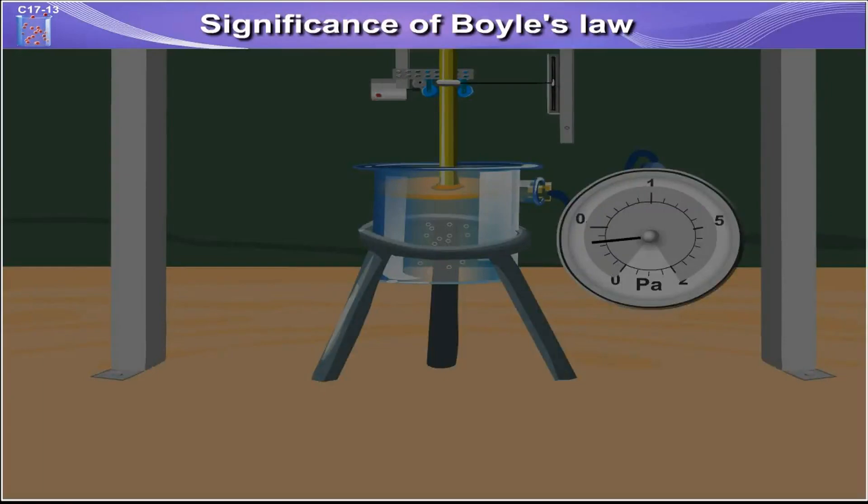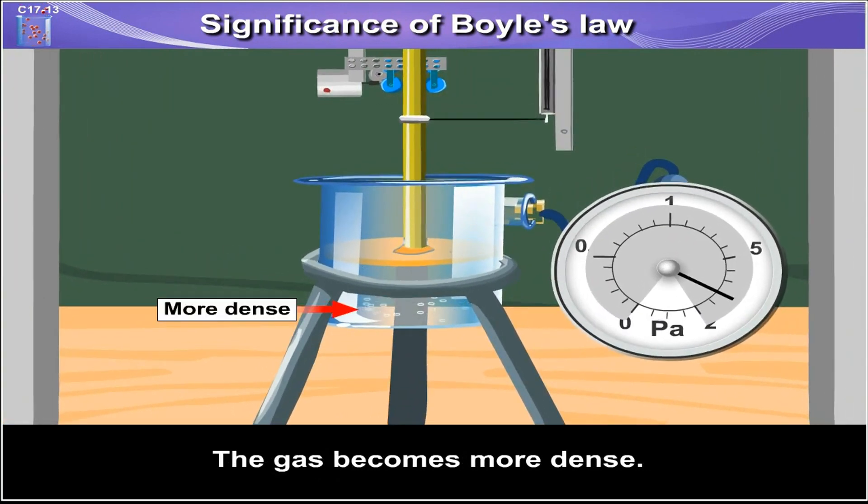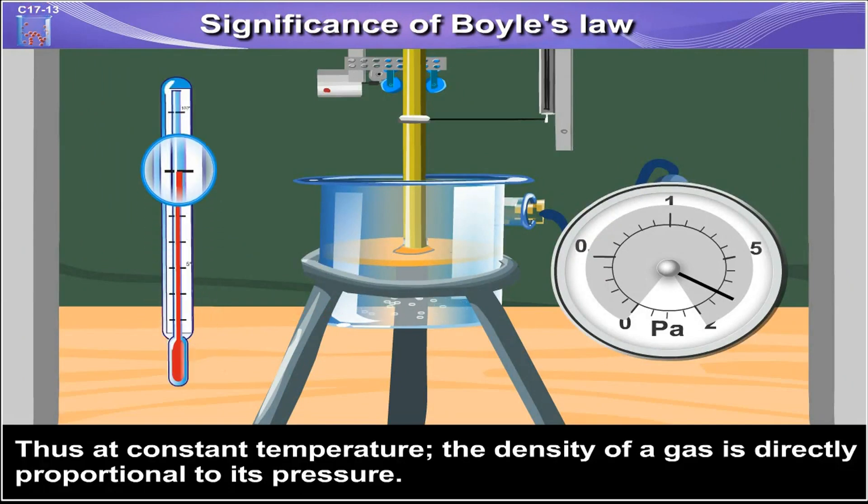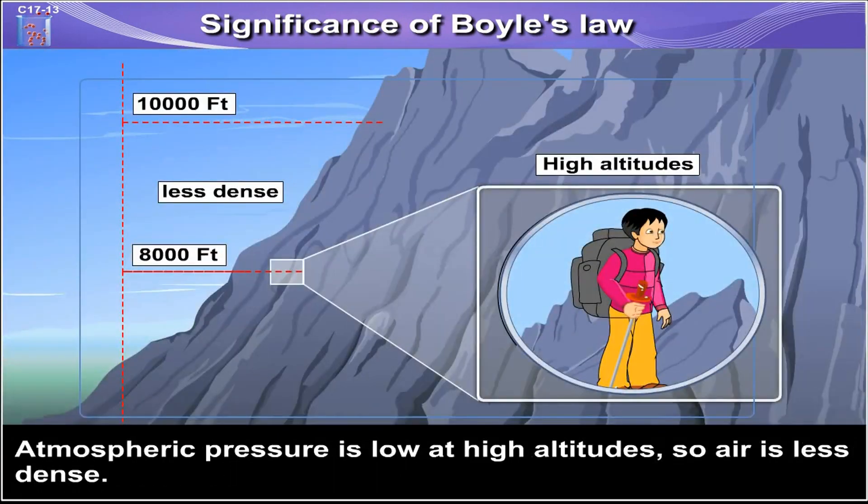Significance of Boyle's Law. On increasing pressure, volume decreases. The gas becomes more dense. Thus, at constant temperature, the density of a gas is directly proportional to its pressure. Atmospheric pressure is low at high altitudes, so air is less dense. Hence, a lesser volume of oxygen is available for breathing.